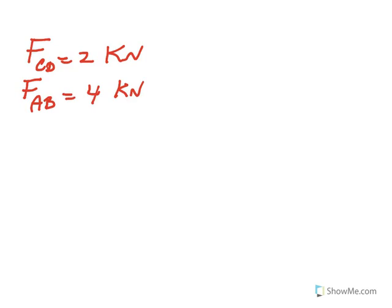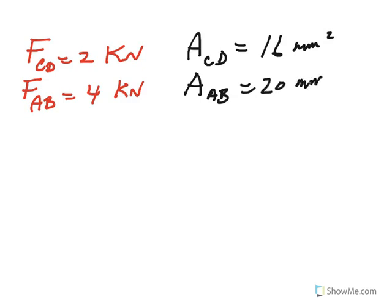So keep in mind that FCD was 2 kilonewtons and FAB came out to be 4 kilonewtons. So this is 2,000 and 4,000 newtons. And the corresponding area, remember, the cross-sectional area of CD was 16 millimeters squared, and cross-sectional area of AB was given to be 20 millimeters squared. So here we go.